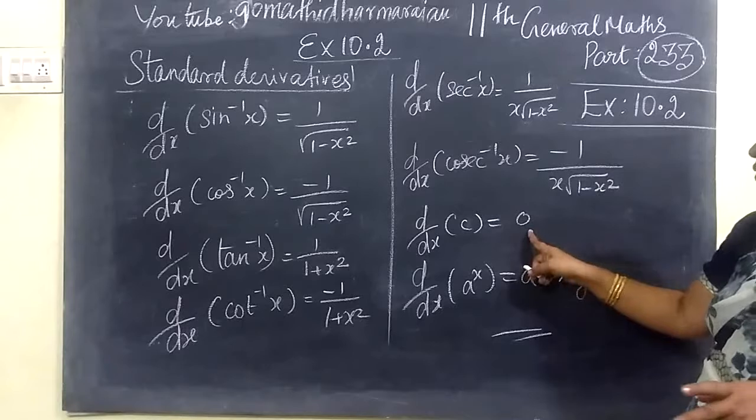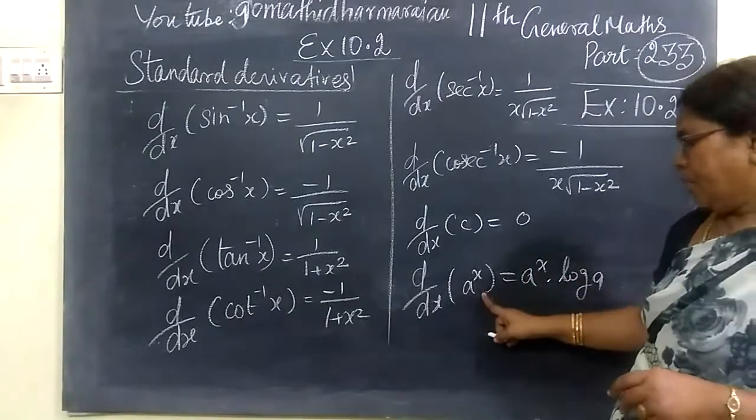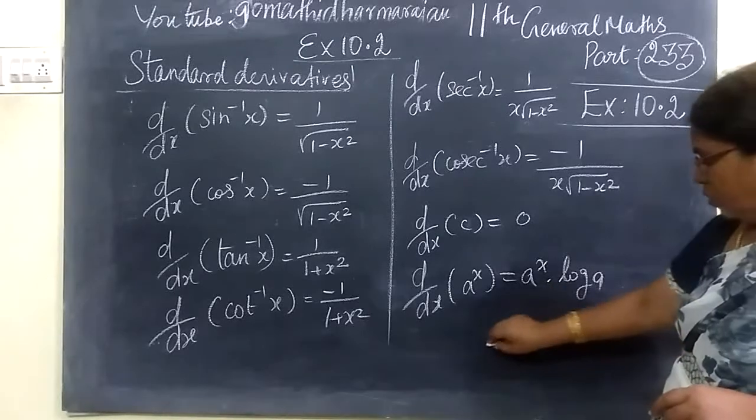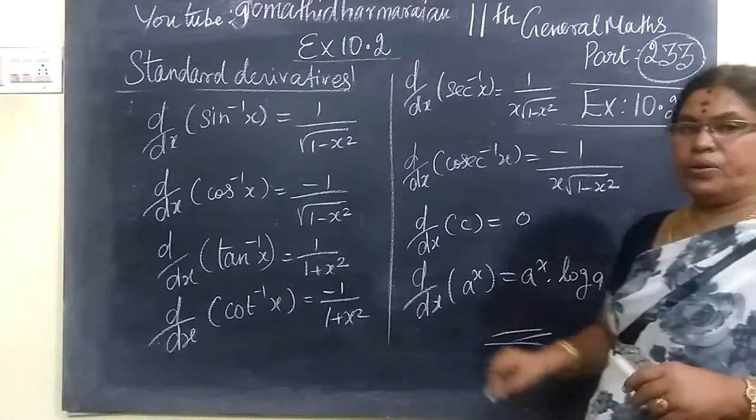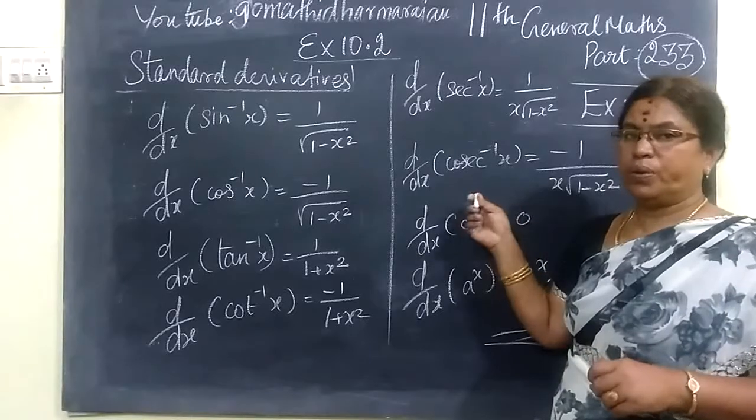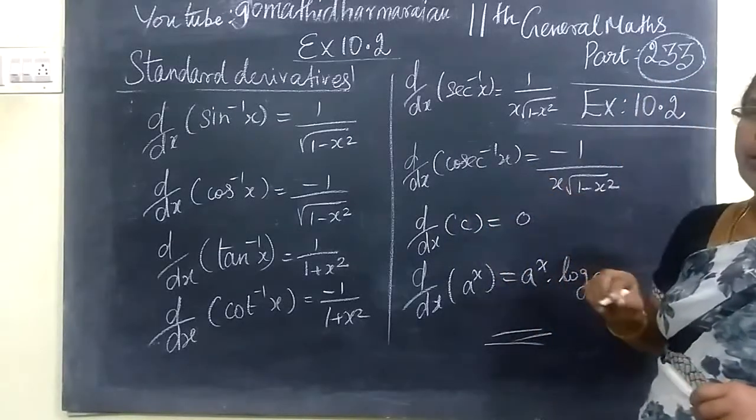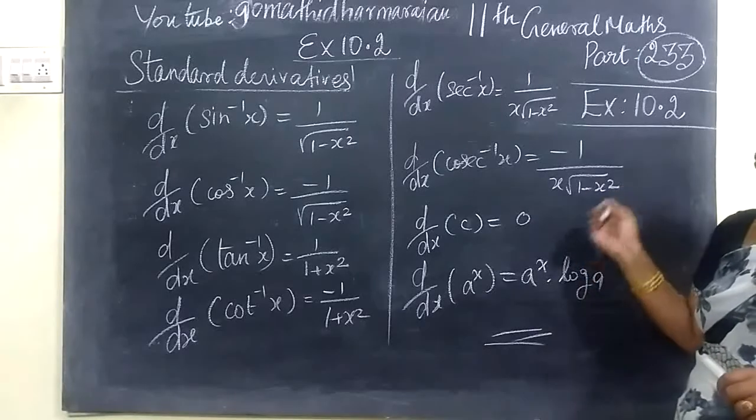d/dx of constant equals 0. d/dx of ax equals a times dx/dx. This is the standard derivative formula. The next video will be 10.2, question number 1 and 2. Thank you.